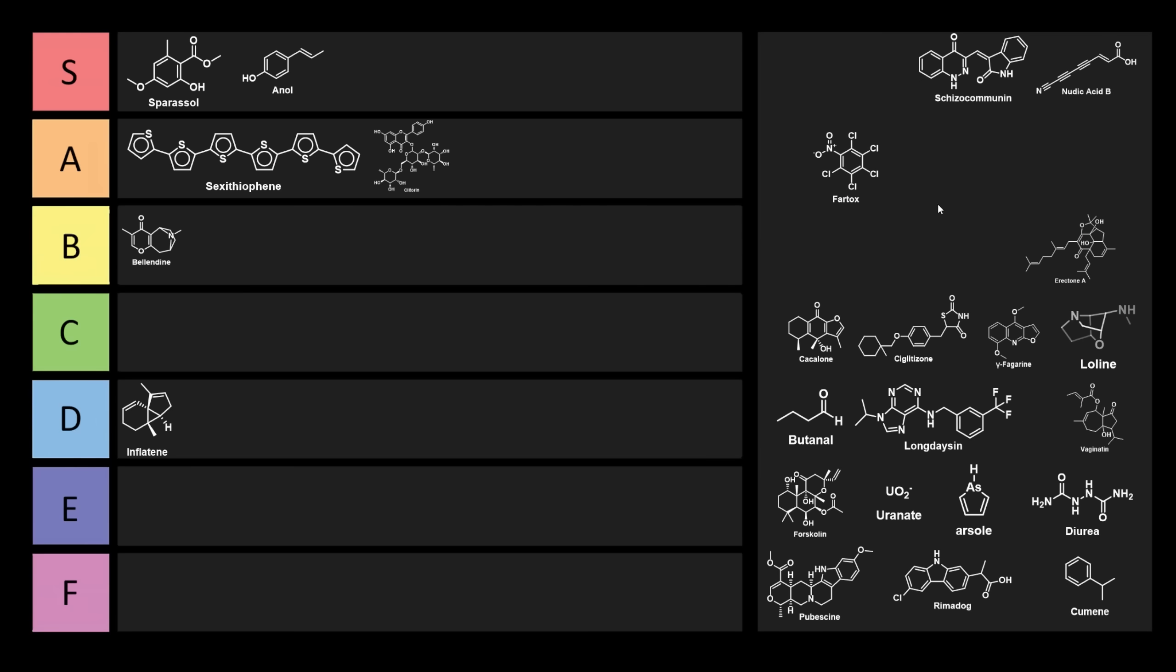We have this interesting one here called phartox. Phartox is really special. It's pentachloronitrobenzene, and this is actually a brand name for a fungicide. Phartox is pretty good. It's a little bit unfortunate. It's not too, too unfortunate. So I think we can probably put that one into C tier. It's not too bad, but you know, it is toxic towards fungi. It's got a pretty unique name though.